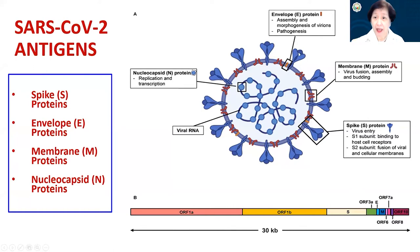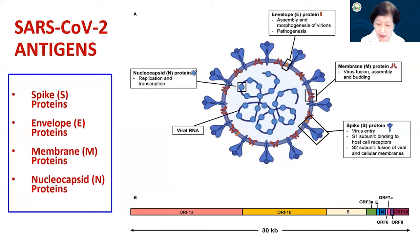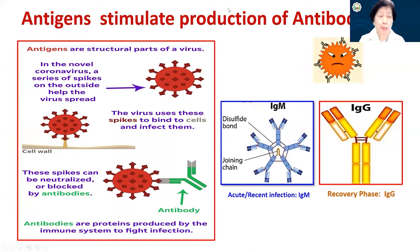Then we have the membrane protein, also involved in viral fusion, assembly, and budding. The envelope protein, which is a small structure, is also involved in assembly and the morphogenesis of the virus as well as in pathogenesis. Then we have the nucleocapsid protein, which is very much involved in replication and transcription. There are other smaller antigens, but these are the main ones related to my topic.